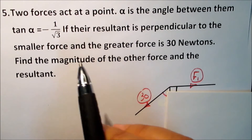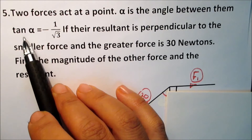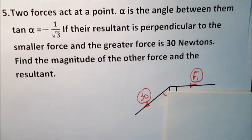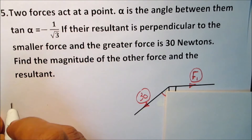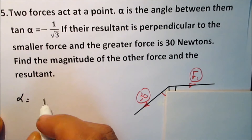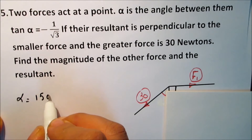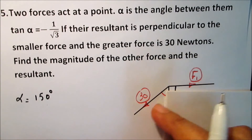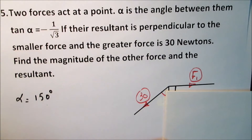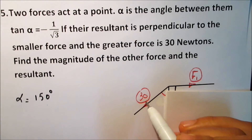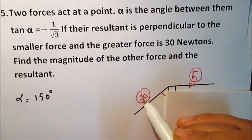We have two forces. The angle between them is alpha, where tan alpha equals negative 1 over square root 3. Using the calculator, alpha is 150 degrees. So the angle between the two forces is 150 degrees. F1 is the unknown smaller force, and the other force F2 is 30 N, which is the greater force.